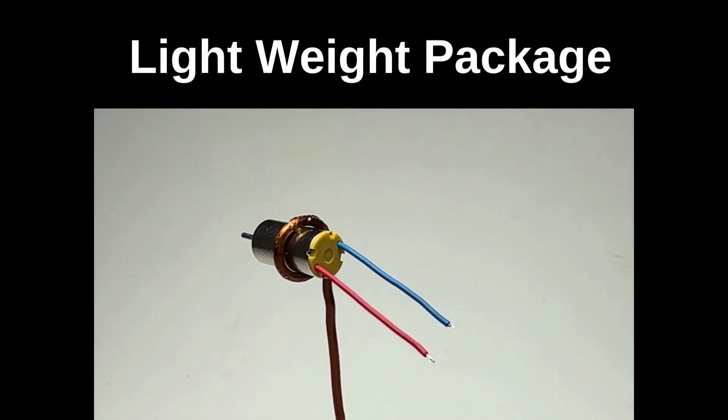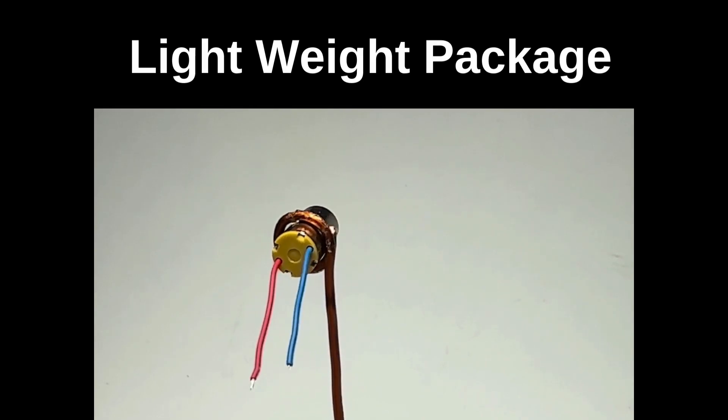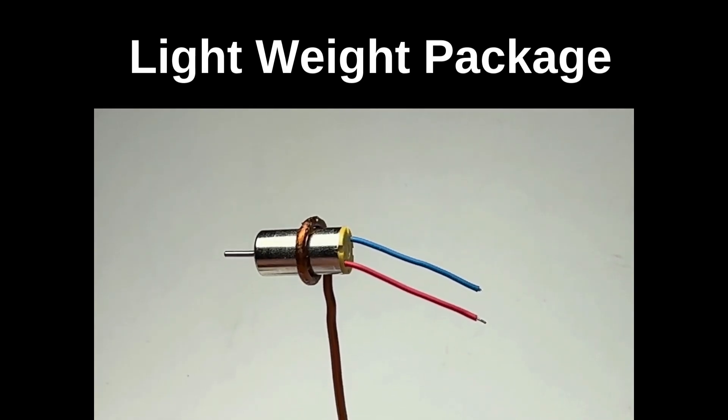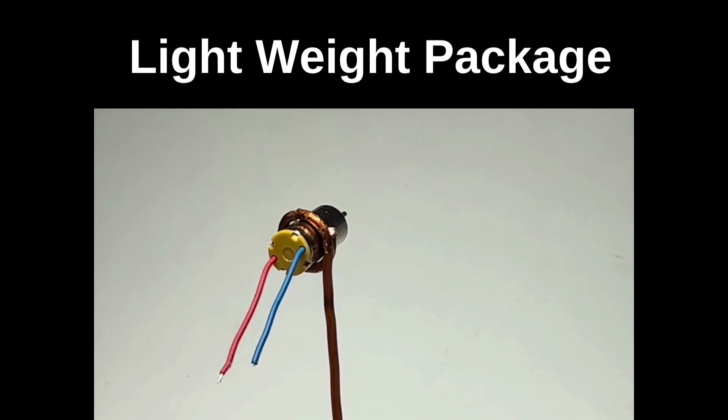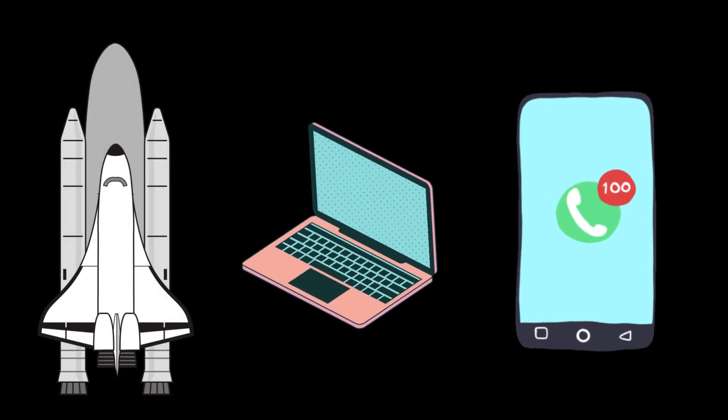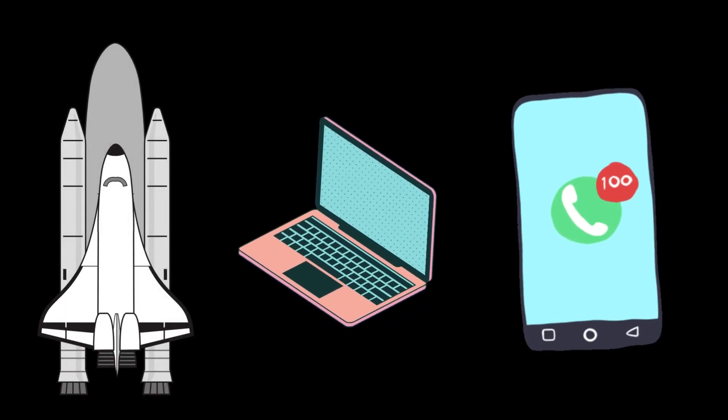Next up, high power density. Coreless DC motors pack a punch in a lightweight package, making them ideal for applications where weight is a critical factor. Think aerospace and portable electronic devices.